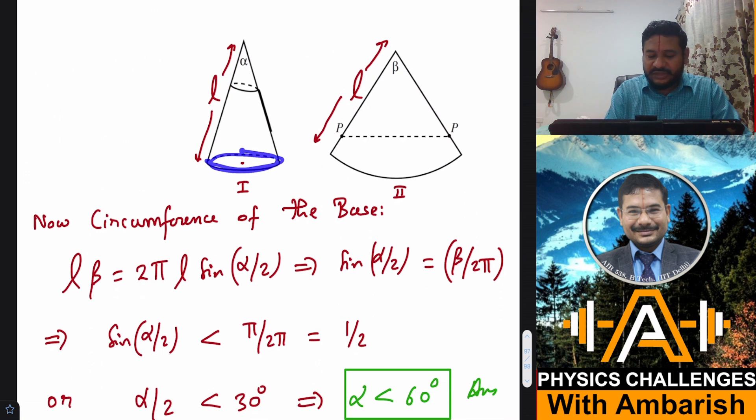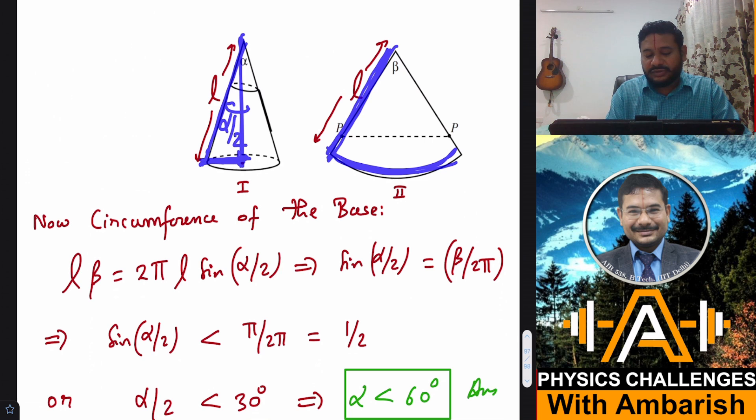See, this is the circumference of the base of the cone and this upon cutting, this becomes a circumference. So both these should be equal, right? So now what about this slant height of this cone is L, then this is L beta. And then if this is the slant height, then this vertical, if you draw here, the radius becomes L sine of alpha by 2 because this angle is alpha by 2.